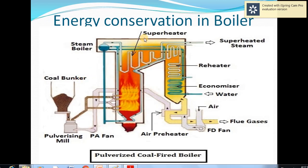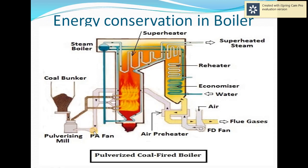The construction of the boiler consists of different parts: drum, superheater, reheater, and economizer. There is also an air preheater, coal mill, and bunker. The PA fan, FD fan, ID fan, and chimney are also components — though the ID fan and chimney are not shown here. These are the different parts of the boiler.